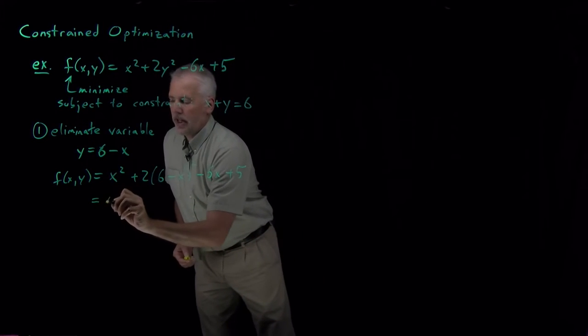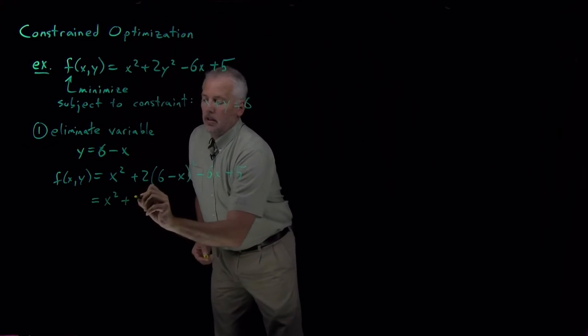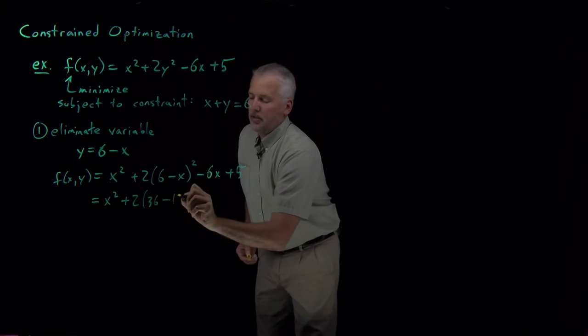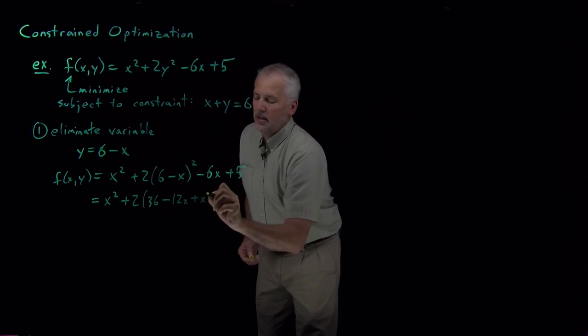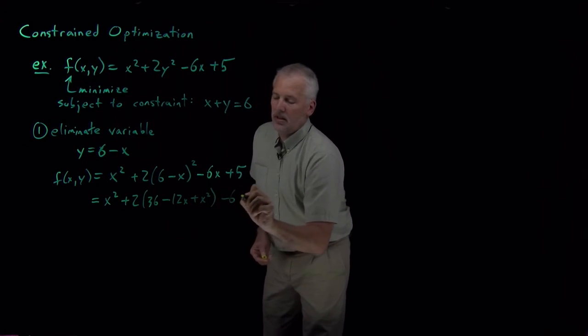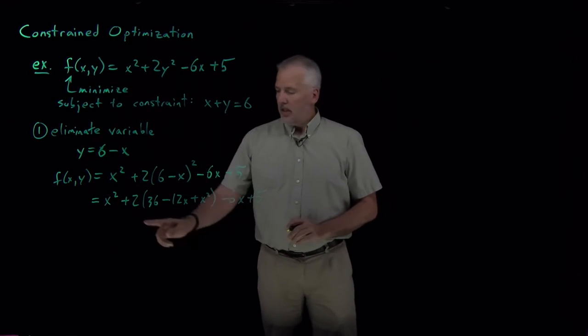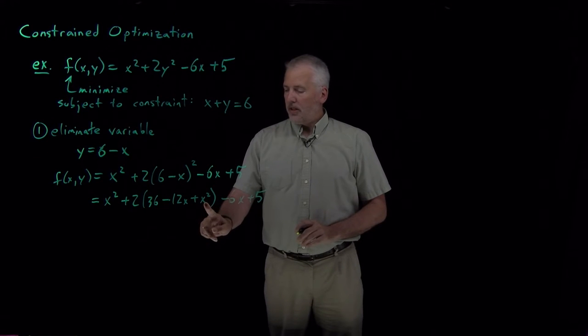I just have a little algebra to do. (6 - x)² is 36 - 12x + x². If I combine terms in that equation, I've got 2x² in this parenthesized term, an extra x² over here.